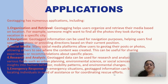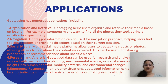Navigation: Geotagged information can be used for navigation purposes, helping users find specific locations or providing directions based on their current position. For example, if a person uploads geotagged information such as the latitude and longitude of a given location, they can get the route to reach that location. The third application is social media — many social media platforms allow users to geotag their posts or videos, allowing others to see where the content was created.